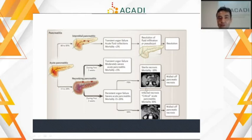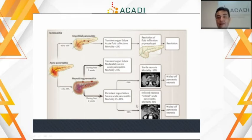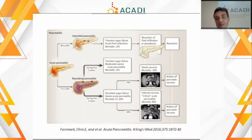¿A qué se debe que unos pacientes cursen con esa severidad? Esos mecanismos no son bien comprendidos. Hay factores de riesgo: la obesidad, la edad, algunos creen que también la etiología alcohólica puede condicionar más severidad, pero realmente no sabemos por qué unos están más enfermos que otros e infortunadamente un porcentaje fijo van a cursar con necrosis y con un pronóstico peor.